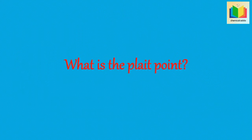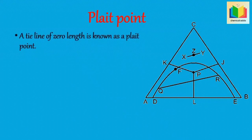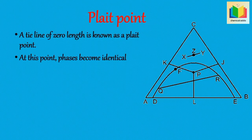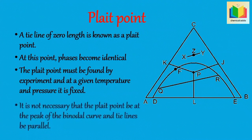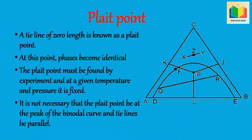Next question: what is the plait point? A tie line of zero length is known as the plait point. At this point, phases become identical, which means a single-phase solution is obtained and it does not split into two phases. The plait point must be found by experiment, and at a given temperature and pressure it is fixed. In this triangular coordinate diagram, point F is the plait point. It is not necessary that the plait point is at the peak of the binodal curve, nor that tie lines be parallel.